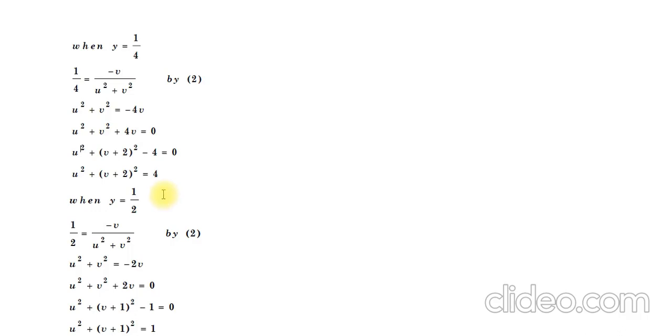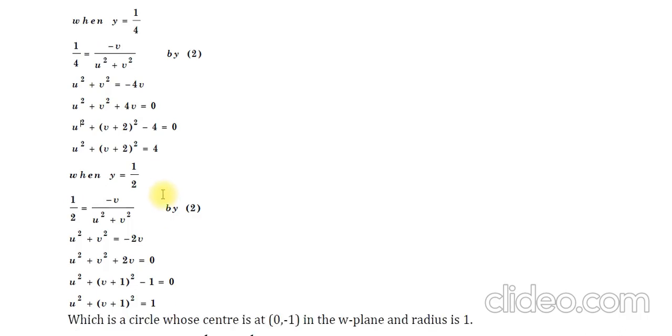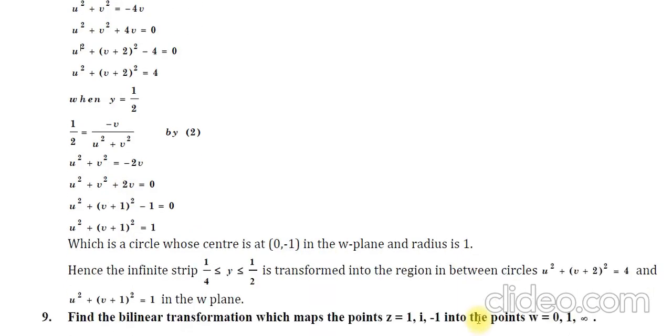Similarly, when y = 1/2, in the same manner we are solving. y = 1/2 equals -v/(u² + v²), so u² + v² = -2v. Again proceeding in the same way, we are getting again a circle with center (0, -1) and radius 1.